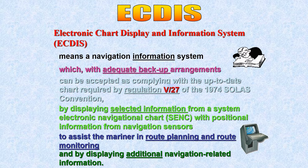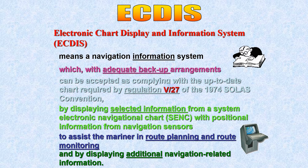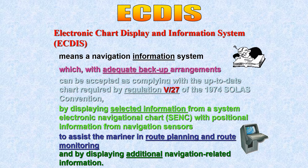ECDIS, as you know, is an Electronic Chart Display and Information System — that is what it stands for. I don't want to just read the definition from the screen; I want you to understand what each part of the definition means. The first thing to remember is that ECDIS is not defined by SOLAS.